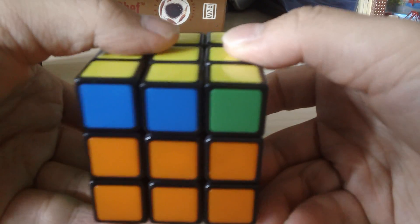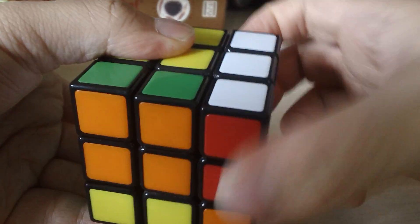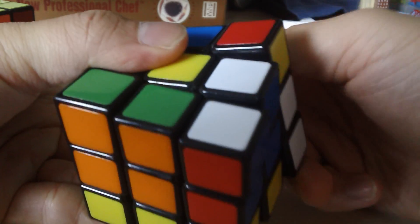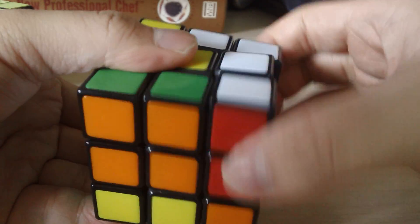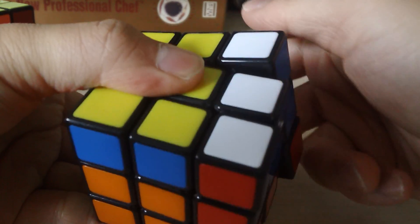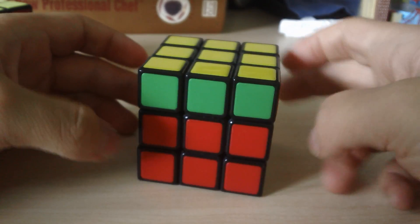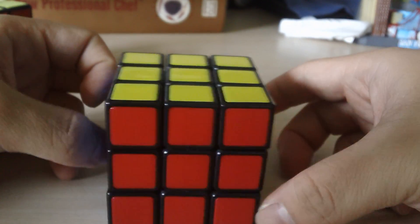So put the red in the back and apply the algorithm again. Right, front, right, back twice, right, front, right, back twice, right twice. And now you should have headlights, and in this case a solved cube.